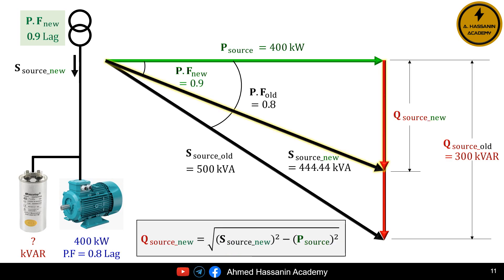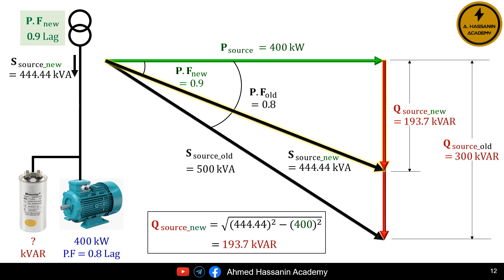Also, we can calculate the reactive power of the source after installing the capacitor, that is, after improving the power factor. Q source new is equal to the square root of (S source new)² minus (P source)², which equals the square root of (444.44 kVA)² minus (400 kW)², which equals 193.7 kilovars.